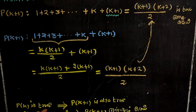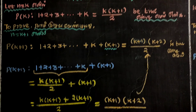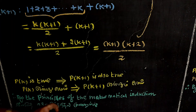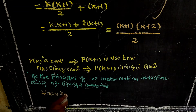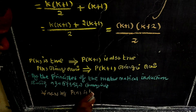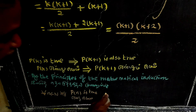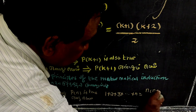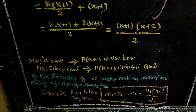Therefore, P(k) is true implies P(k+1) is also true. By the principles of mathematical induction, for all n belonging to the natural numbers, P(n) is true. That is, 1 plus 2 plus 3 plus etcetera plus n is equal to n(n+1)/2.